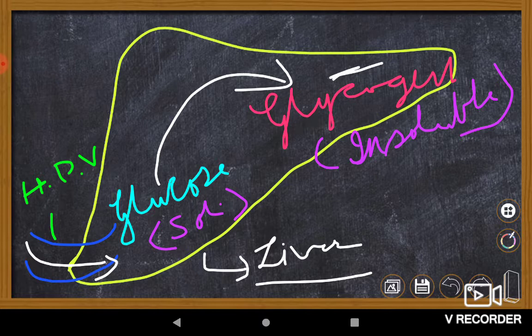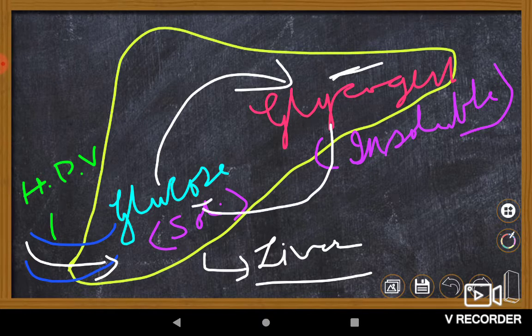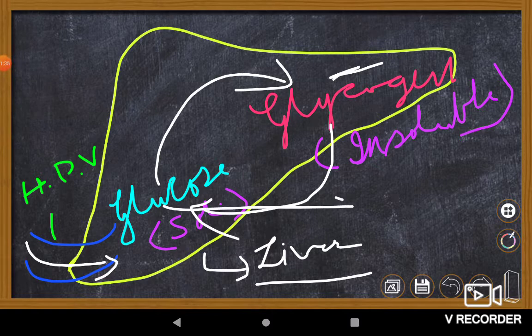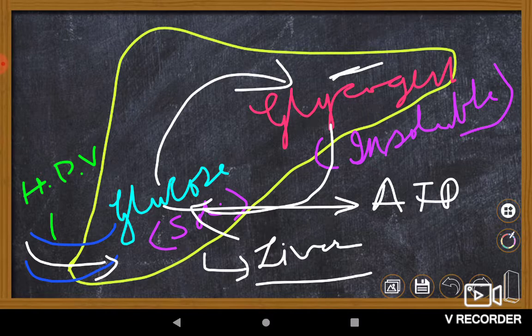Whenever our body requires it, it reconverts the insoluble glycogen into soluble glucose. Glucose provides energy to the body cells and glucose helps in synthesizing of certain compounds as well.